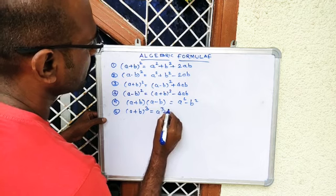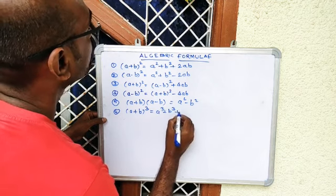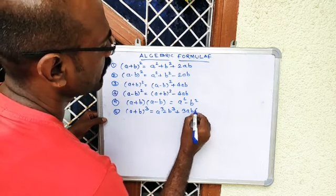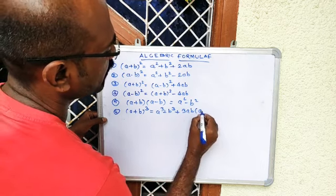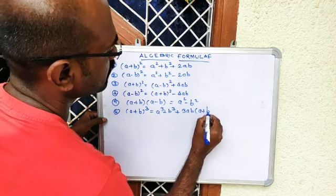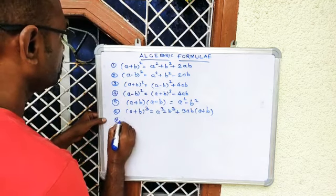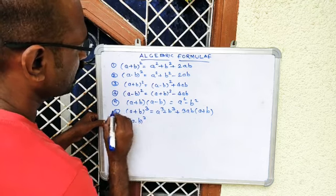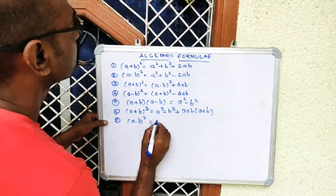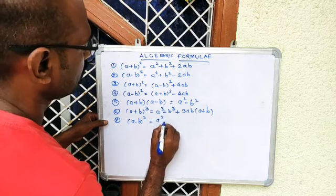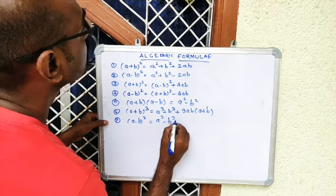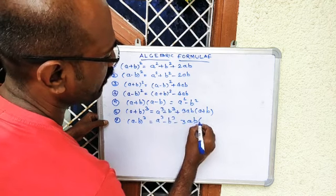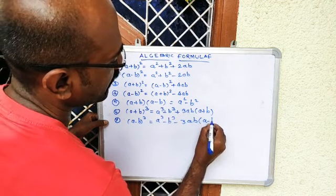Number six: (a + b)³ = a³ + b³ + 3ab(a + b). Number seven: (a - b)³ = a³ - b³ - 3ab(a - b).